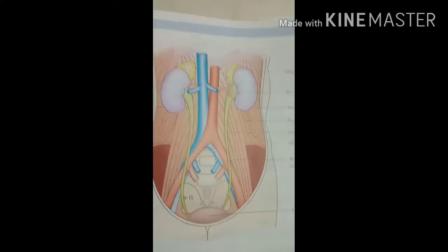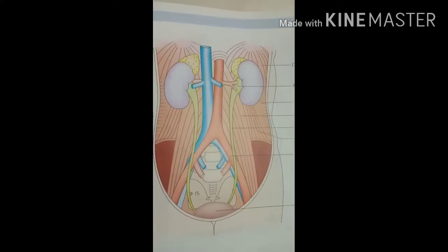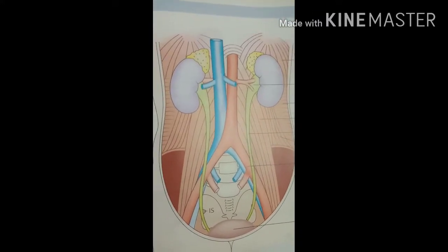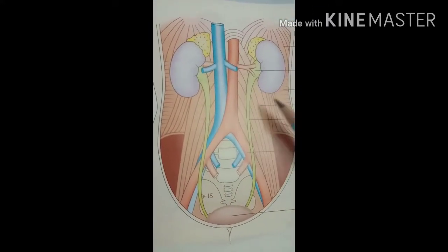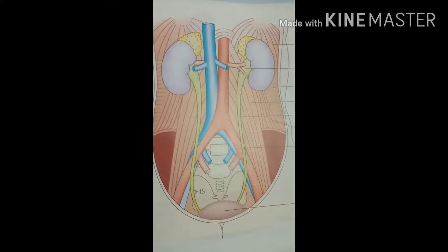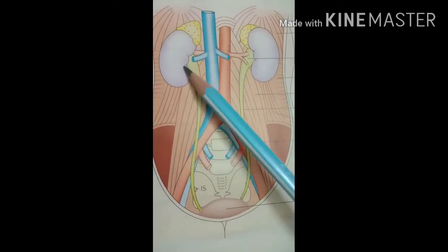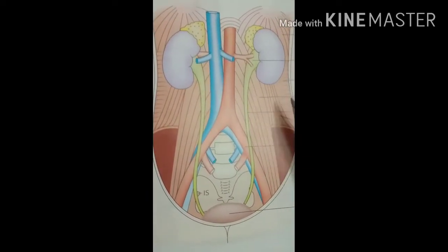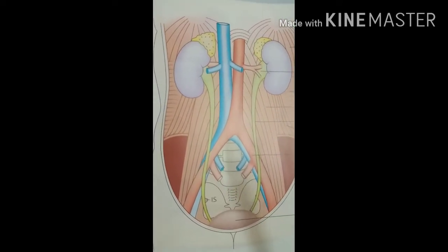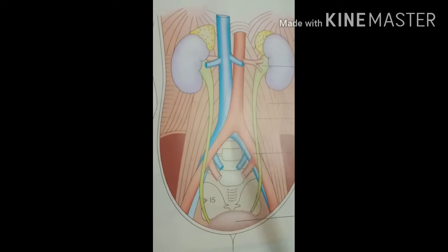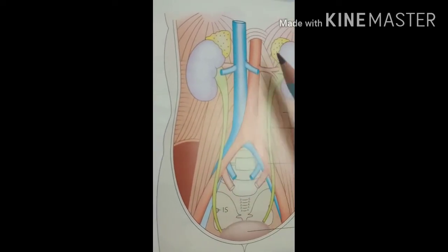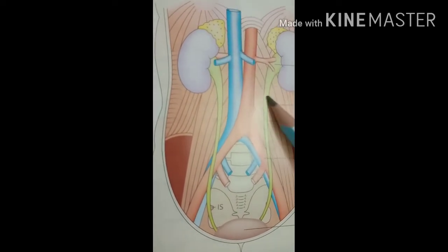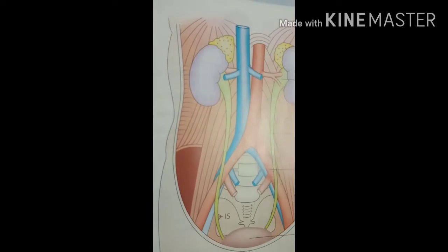The outer layer of the ureter is called the tunica adventitia, and it is made of connective tissue. Regarding the lumen of the ureter, it is commonly 3 mm. However, the lumen is not uniform throughout its length. In some regions there is dilatation, and in other regions there is narrowing.